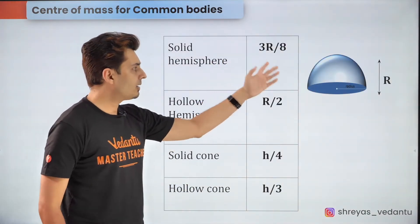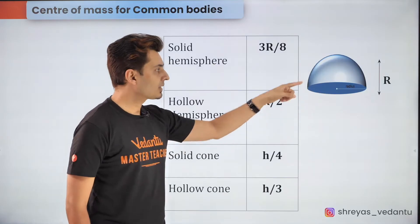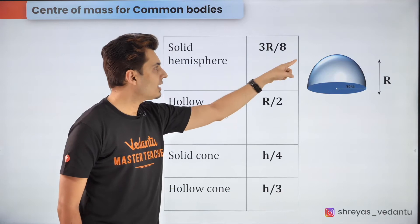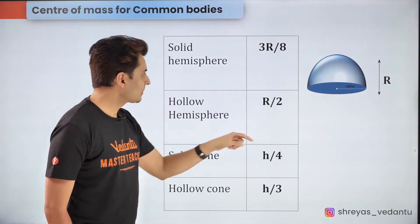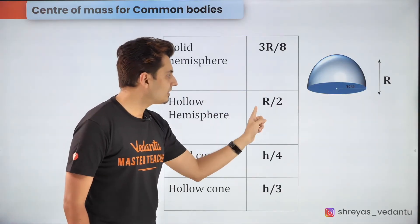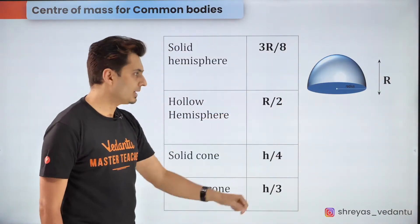For example for a solid hemisphere the center of mass lies on the line of symmetry and it is at a distance of 3r by 8 from the base. Similarly for a hollow sphere the center of mass lies at a distance of r by 2 measured from the center of the base.